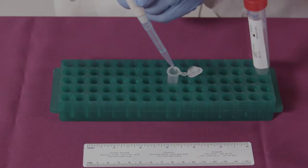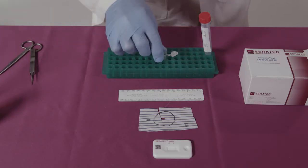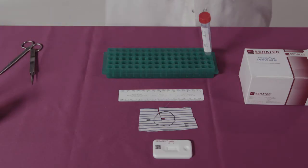To conduct a test, add three drops or 120 microliters of extract to the sample hole on the cassette. You will see the sample travel up the membrane.